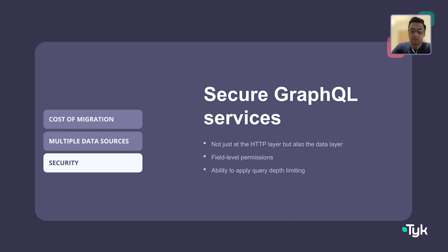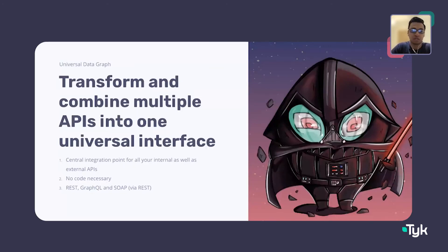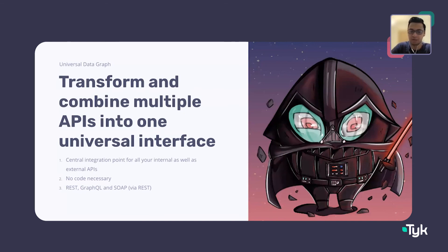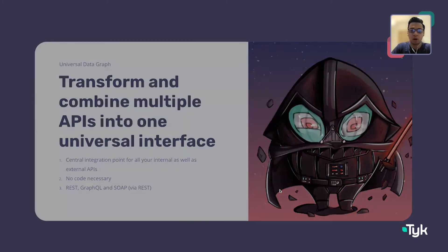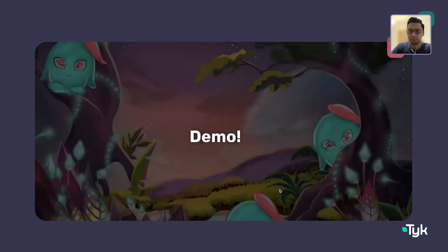What is the Universal Data Graph? It's our product that enables you to transform and combine multiple APIs into a universal interface — a central integration point for all your internal and external APIs in a no-code manner. You can use REST endpoints, GraphQL endpoints, or combine both. You can even combine SOAP endpoints by converting SOAP to REST using our available plugin.